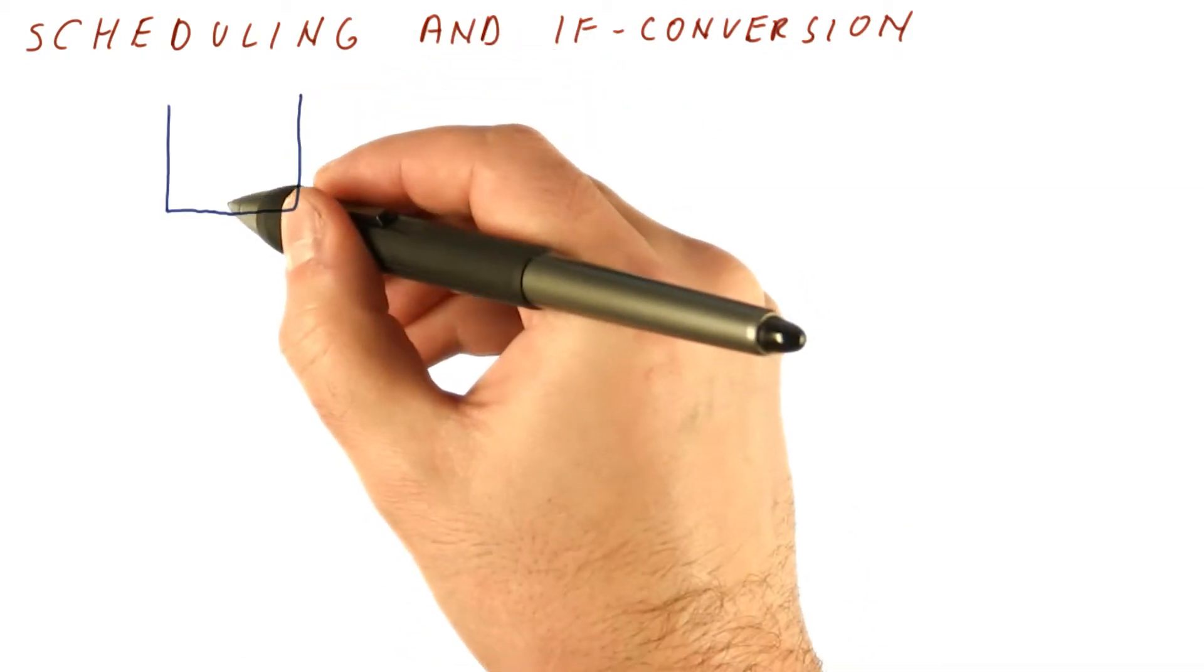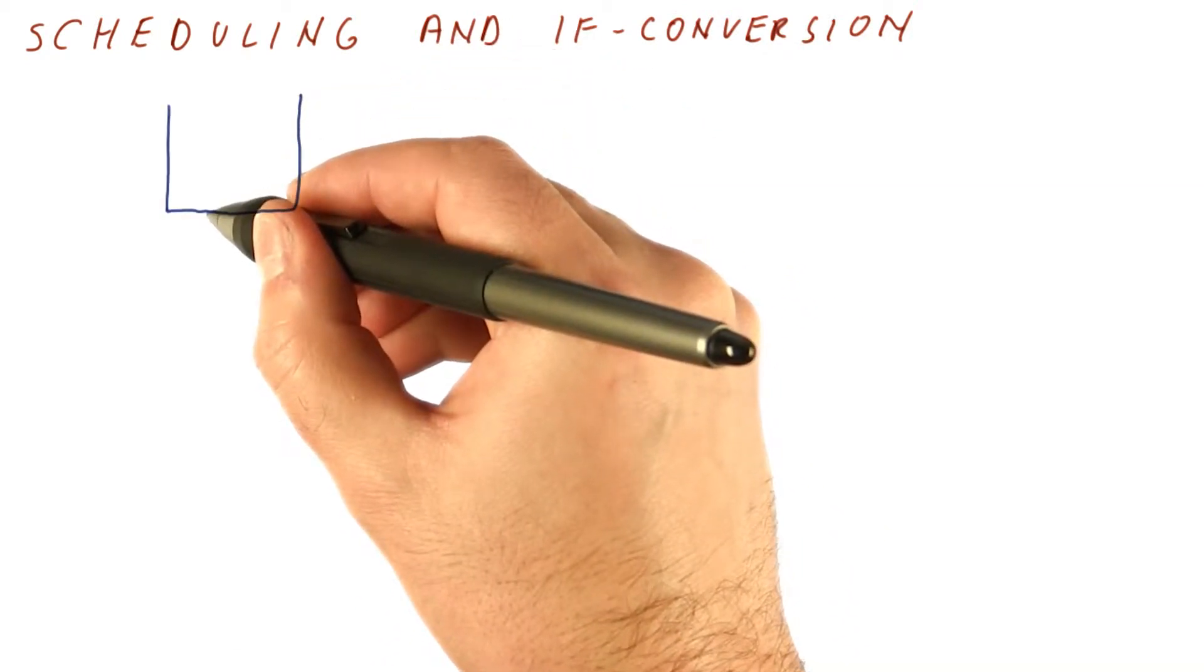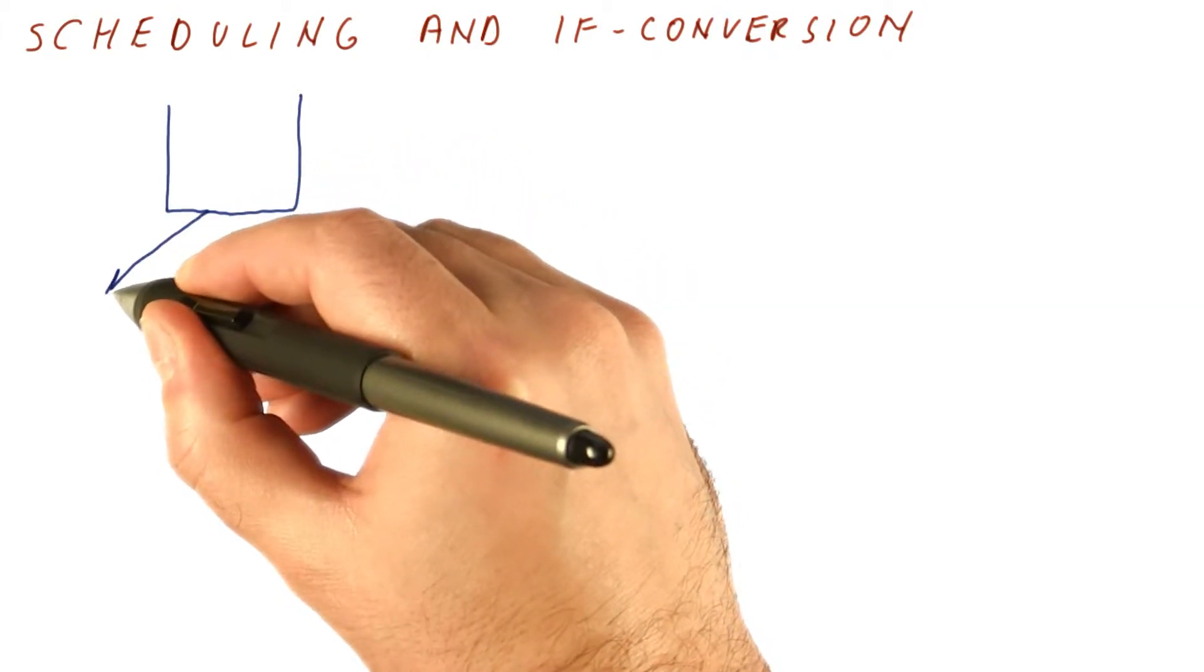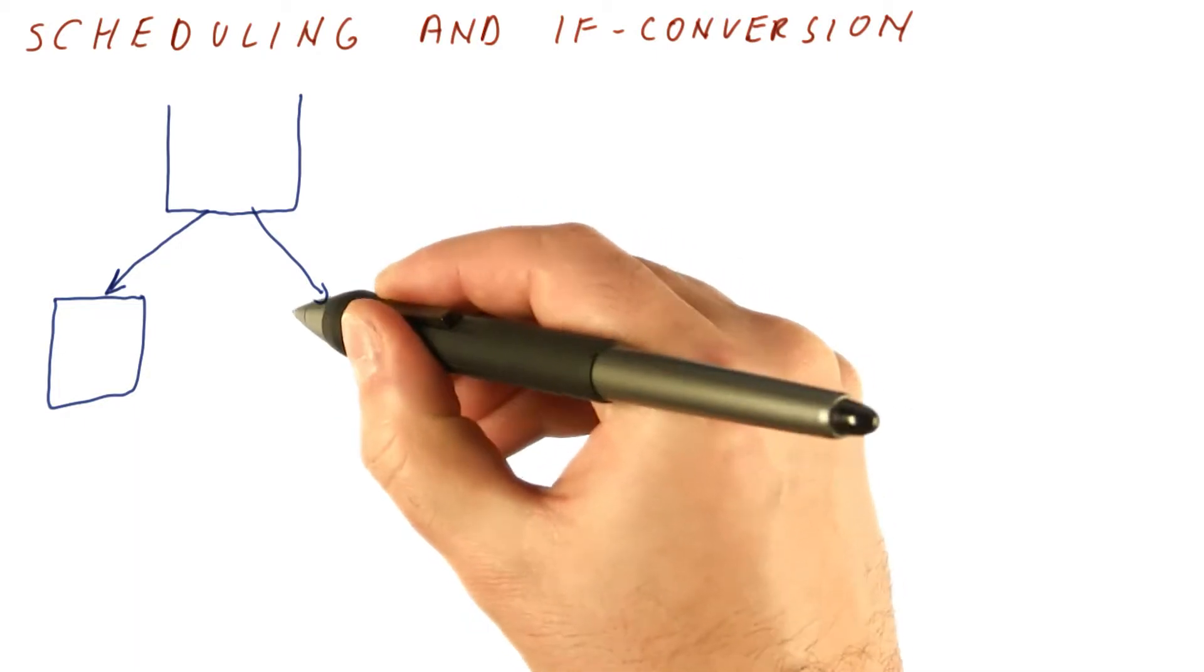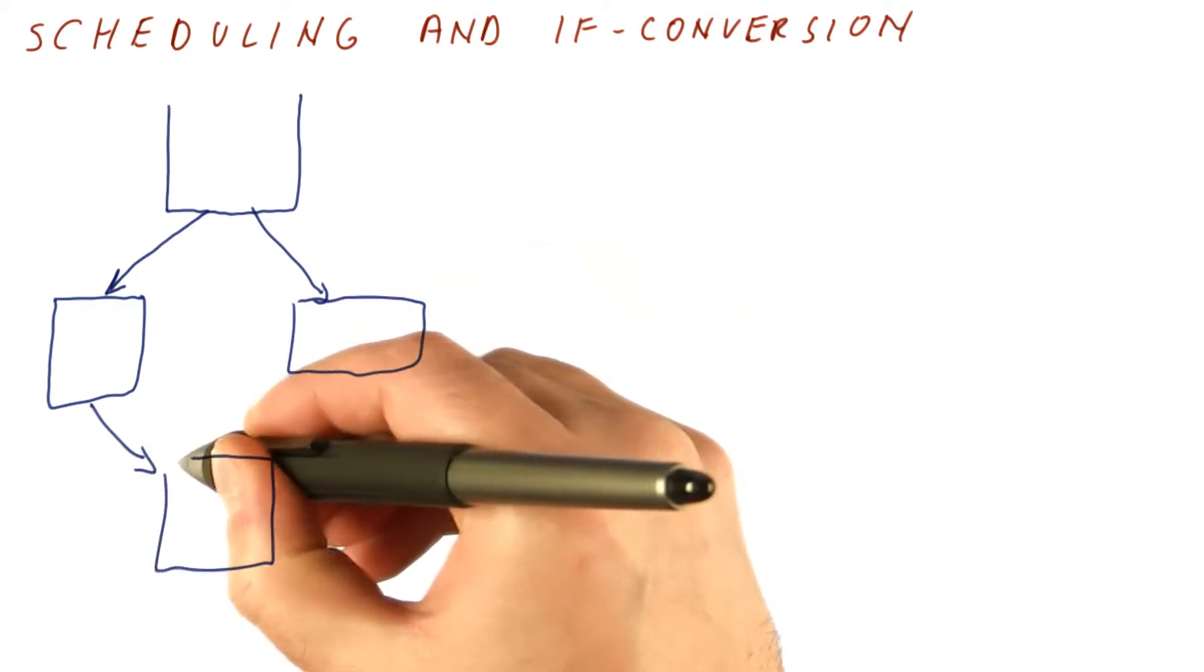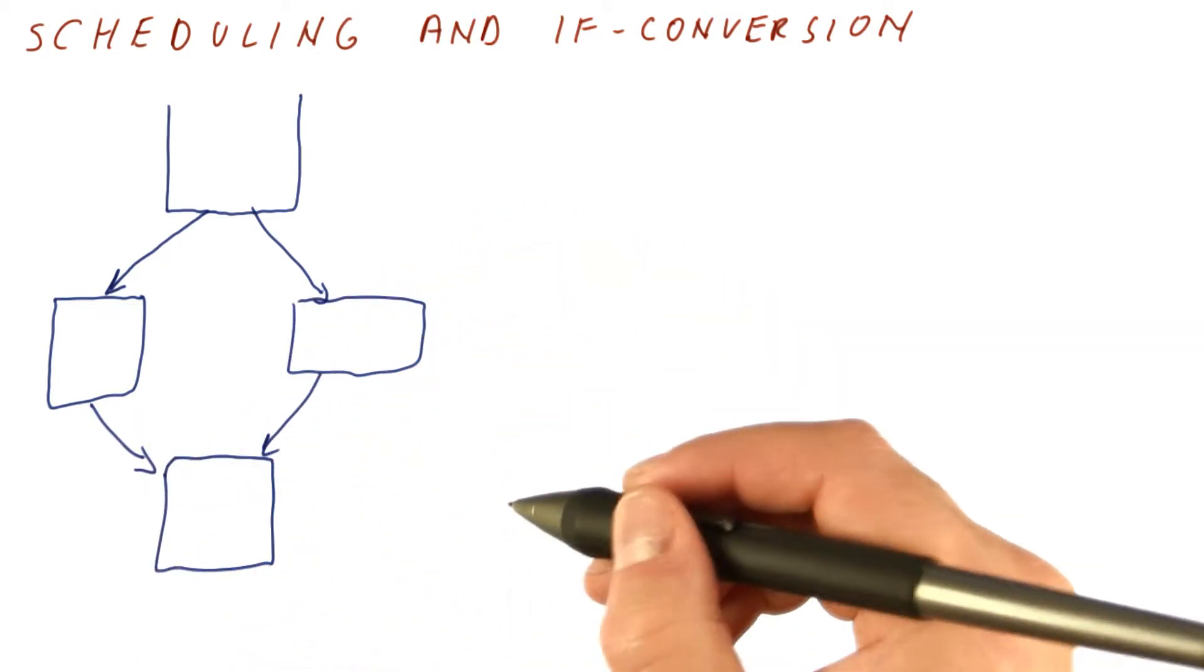Recall that if-conversion works like this. We had some code, and then there is an if-then-else, which means there is a branch. Sometimes we do this, sometimes we do this, and then we go back to doing something after the if-then-else.